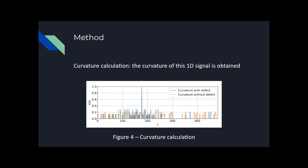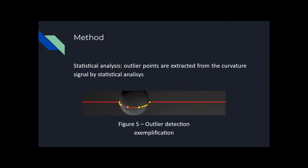With this signal, we calculate the curvature of it. Our approach shows that points close to the defect get a high curvature value being described as outliers. Therefore, we use statistical techniques to detect them.